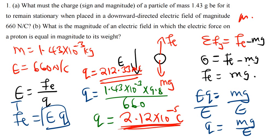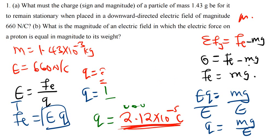That is the magnitude of this charge. Now the question also asks for the sign. To find the sign, we need to think about the electric field and the electric force. A positive charge will move in the same direction as the electric field, while a negative charge will move in the opposite direction.